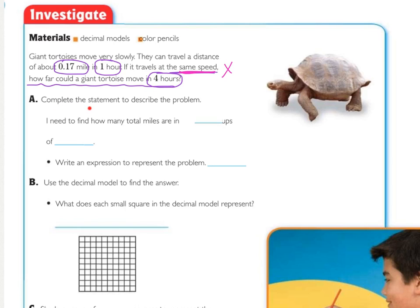When we're working with the same numbers, it's either going to be multiplication or division, and in this case we are repeating the same number, so we are going to be multiplying. Part A, complete the statement to describe the problem. I need to find how many total miles are in four groups of 17 hundredths. So how would we write an expression to represent that? We would go four times 17 hundredths.